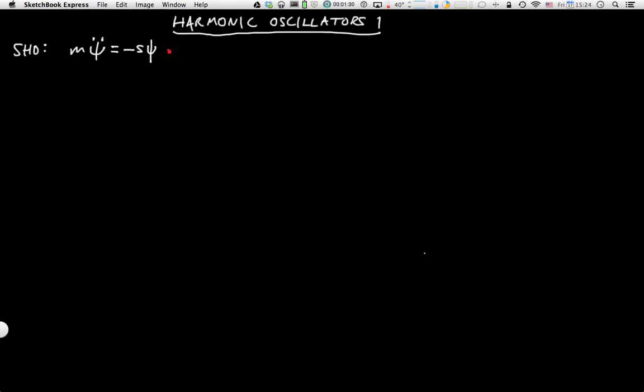To make things slightly simpler, we want to divide through by mass, so we have ψ̈ equals minus s over m ψ. We want a function whose second derivative returns the function but with a minus sign, so we might think of a trigonometric function.